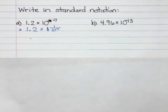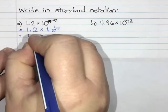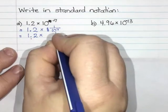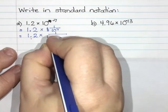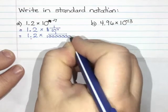So 10 to the power of negative 7 is the same as 1 over 10 to the power of 7. So 10 to the power of 7 would be a 1 with 7 zeros: 1, 2, 3, 4, 5, 6, 7.